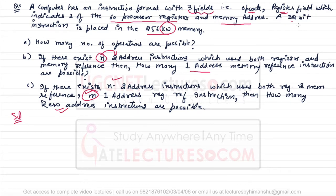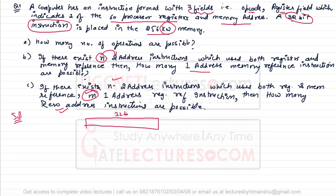The size of the instruction is 32 bits. This entire instruction has three fields: the first field is the operation code, the second field contains the register address, and the third field contains the memory address.